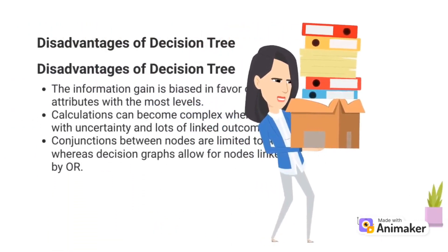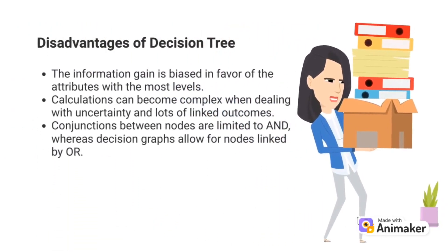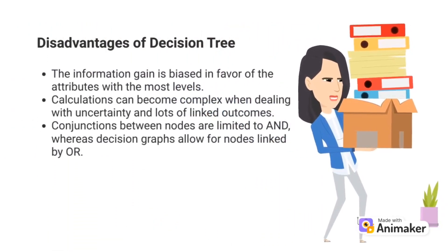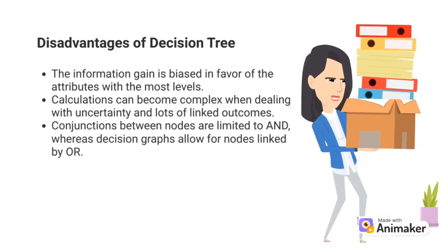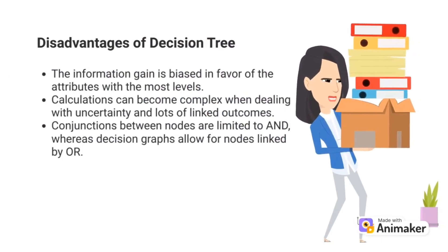But there are also a few disadvantages. When dealing with categorical data with multiple levels, the information gain is biased in favor of the attributes with the most levels. Next, calculations can become complex when dealing with accuracy and lots of linked outcomes. Lastly, conjunctions between nodes are limited to AND, whereas a decision graph allows for nodes linked by OR.